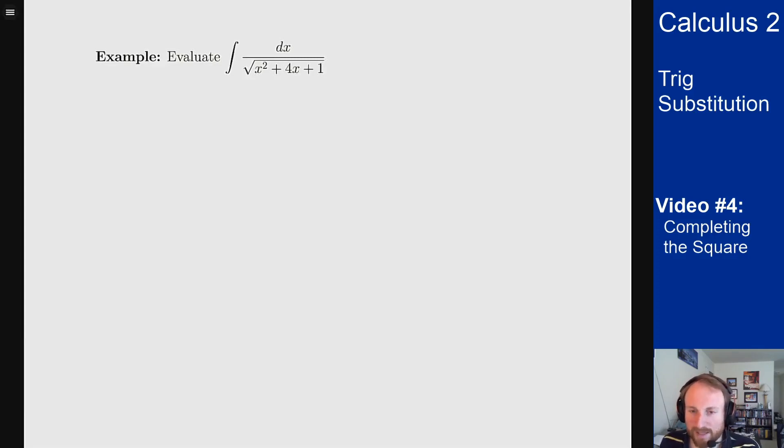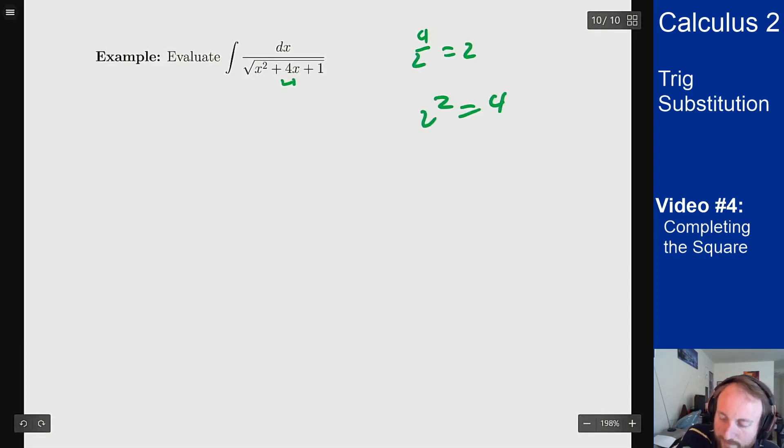So I need to make this a perfect square. The way you generally do that, you take this middle coefficient here, you take 4, you divide it by 2, you get 2, you then square that, you get 4. That means that the thing I need to add is I need to have a plus 4 to make it a perfect square.